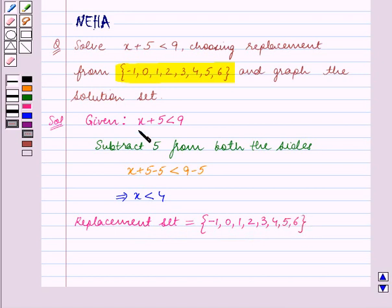Since after solving the inequation we get x < 4 and we have to choose the solution set from the replacement set, we choose all the numbers in the replacement set which are less than 4. These numbers are -1, 0, 1, 2, 3.